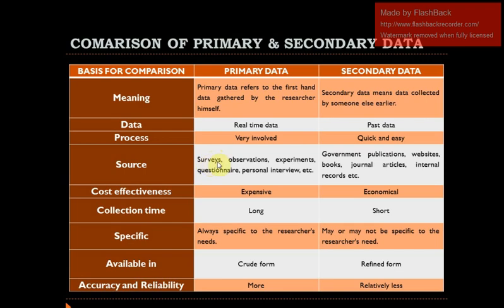Next basis for comparison is the source. Primary data sources include: observation, experiments you conduct yourself, questionnaires you administer, and personal interviews. Secondary data sources include: government institutions, websites — if you collect data from a website it is secondary data — journals, articles, and internal records from any office.